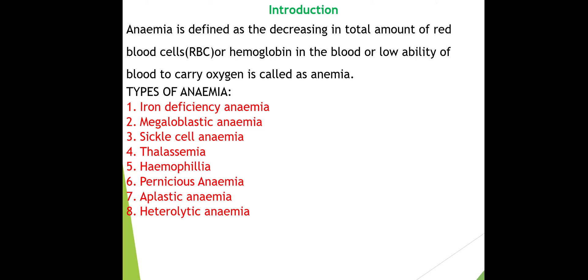There are eight types of anemia: iron deficiency anemia, megaloblastic anemia, sickle cell anemia, thalassemia, hemophilia, pernicious anemia, aplastic anemia, and hemolytic anemia.